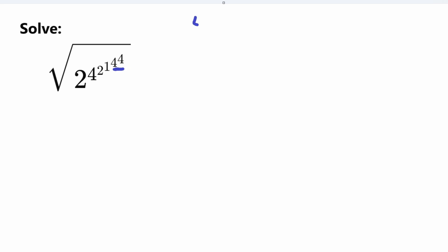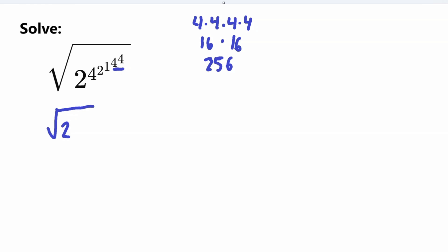4 to the power of 4 is 4 multiplied by itself 4 times — so 4 times 4 times 4 times 4. 4 times 4 is 16, so this is equal to 16 times 16. And 16 times 16 is equal to 256. Now let's go ahead and rewrite this into our problem. So we have 2 to the power of 4, to the power of 4, to the power of 2, to the power of 1, to the power of 256.